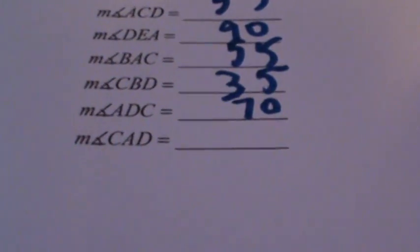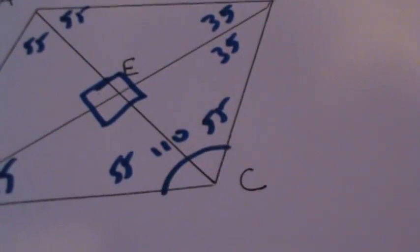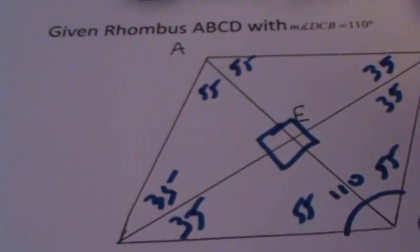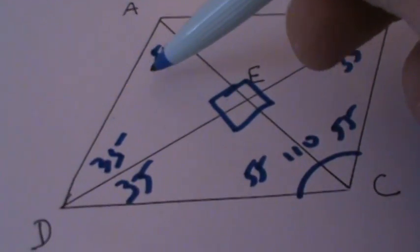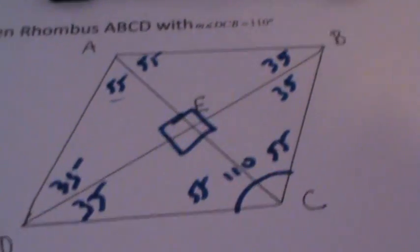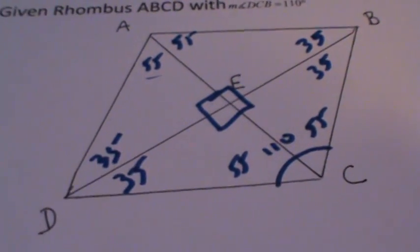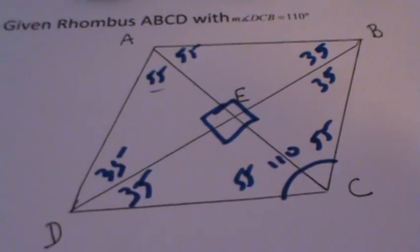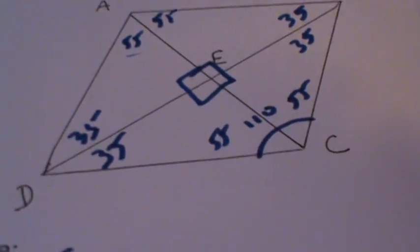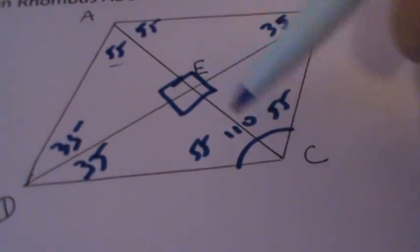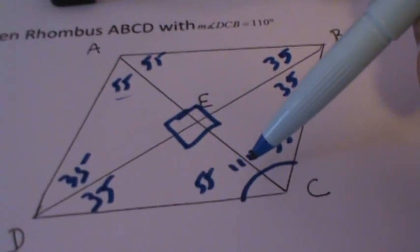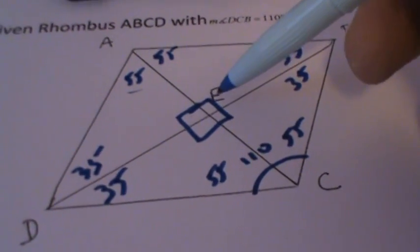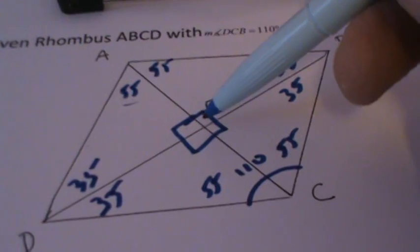The last angle to find is angle CAD, located in the upper corner, which equals 55 degrees. To summarize: when solving a rhombus problem with one given angle, remember that the diagonals bisect opposite angles, opposite angles are congruent to each other, and the diagonals are perpendicular — meeting at a right angle.